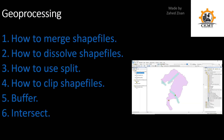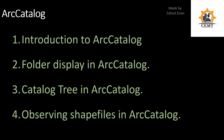The next section is on geoprocessing. We're going to look at geoprocessing tools to conduct different kinds of tasks, such as merging shapefiles, dissolving shapefiles, splitting a single shapefile into multiple shapefiles, clipping shapefiles, and using buffer and intersect to solve various problems. Examples are used in these videos to help you understand better.